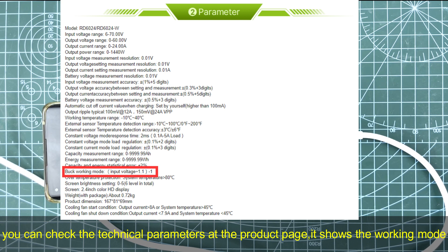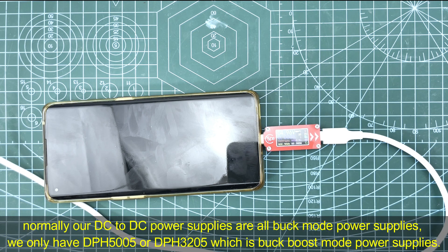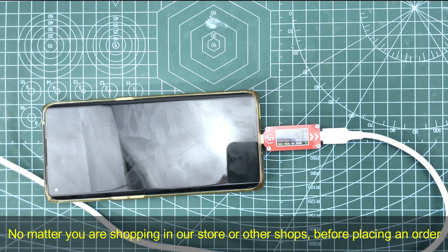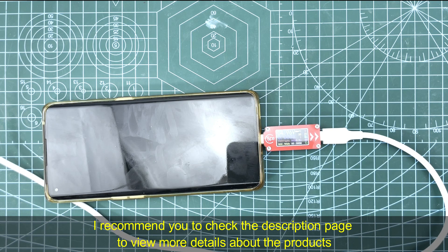It shows the working mode. Normally our DC to DC power supplies are all buck mode power supplies. Only DPH5005 or DPH3205 are buck-boost mode. No matter if you're shopping in our shop or other shops, before placing the order I recommend you check the description page to view more details about the product.